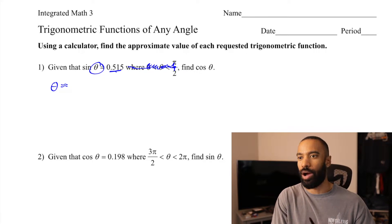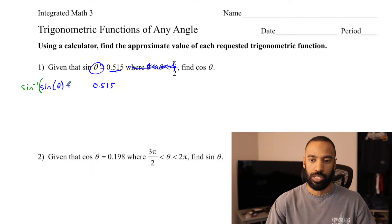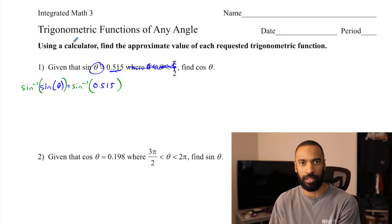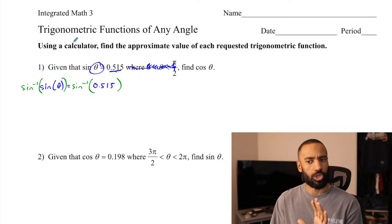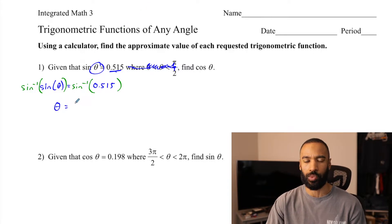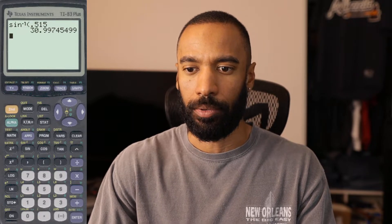If I go to my graphing calculator, the sine of theta is 0.515, so to find theta itself we would have to inverse sine both sides. This is one way to do the problem — we could use Pythagorean theorem, but because we get use of a calculator I'll just reframe. My approximation of theta: inverse sine of 0.515 gives me 30.997 degrees — it's about 31 degrees. I'll leave the exact answer in the calculator but write up here that it's about 31 degrees.